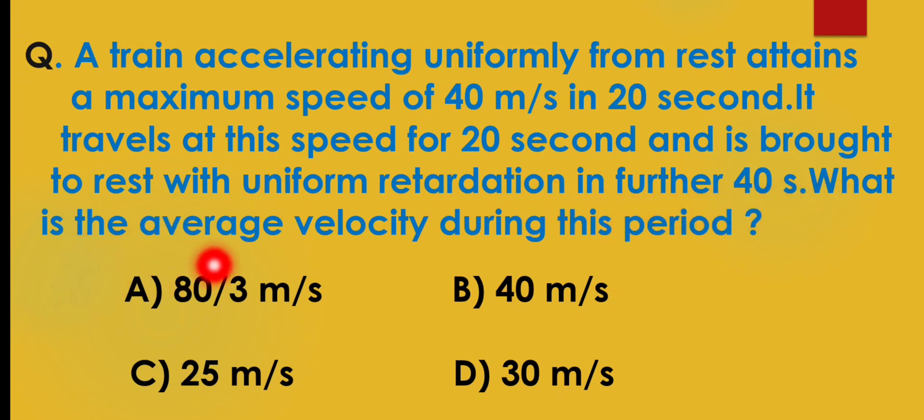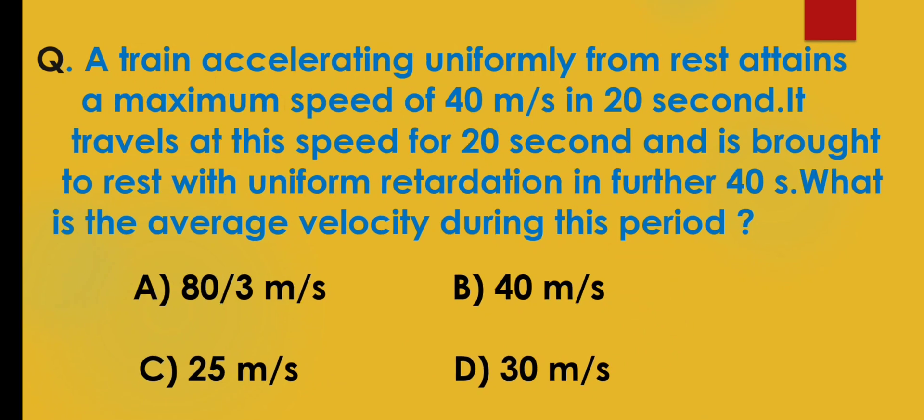What is the average velocity during this period? A: 80 upon 3 meter per second, B: 40 meter per second, C: 25 meter per second, D: 30 meter per second. So we have to calculate the average velocity during this time.